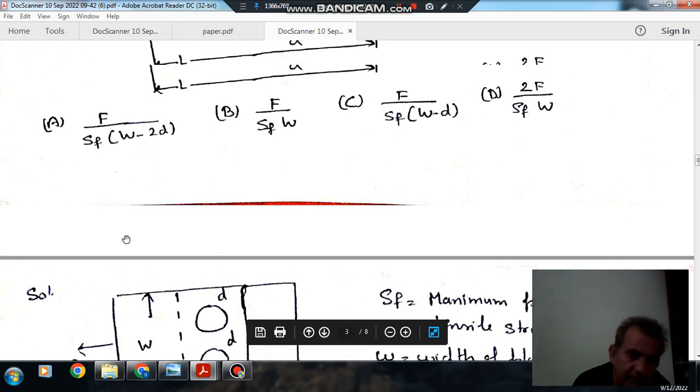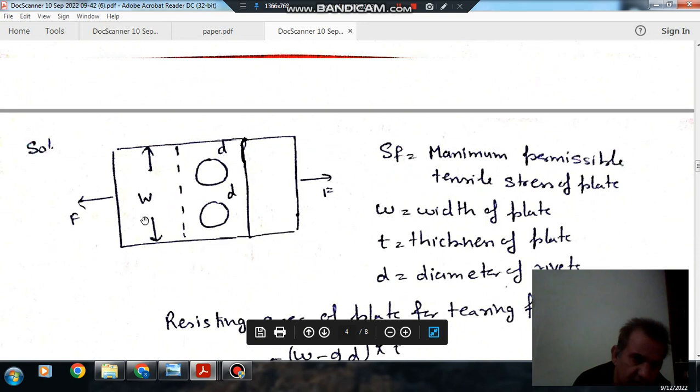So option A is the right answer. So just we have to subtract this 2D, this length that is D, this length D from W.